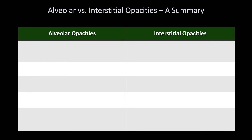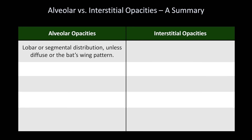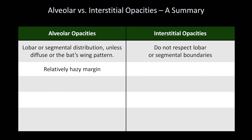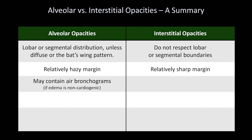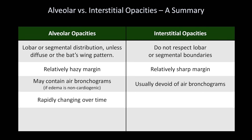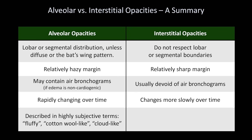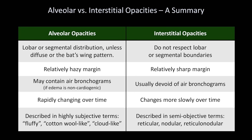To close, here is a summary comparison between alveolar and interstitial opacities. Alveolar opacities show lobar or segmental distribution unless diffuse or in the bat's wing pattern, while interstitial opacities do not respect lobar or segmental boundaries. The margin of alveolar opacities is relatively hazy, while interstitial opacities have a relatively sharp margin. Alveolar opacities may contain air bronchograms if caused by non-cardiogenic pulmonary edema, while interstitial opacities are generally devoid of them. Alveolar opacities can change rapidly — appearing and disappearing within hours — while interstitial opacities evolve much more slowly. Alveolar opacities are described in subjective terms such as fluffy, cotton-wool-like, or cloud-like, while interstitial opacities are described in semi-objective terms of reticular, nodular, or reticulonodular.